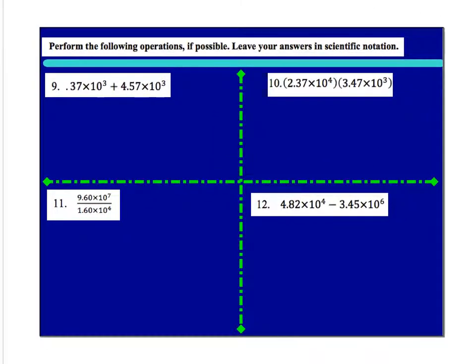Taking a look here, since this is addition, I've got the same here, same here, so that's easy. I just add 0.37 and 4.57. So 0.37 plus 4.57 becomes 4.94 times 10 to the third. That's all it is.